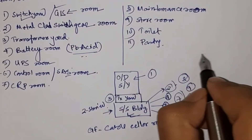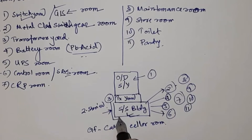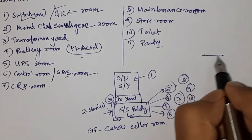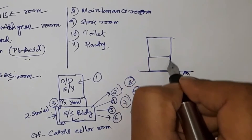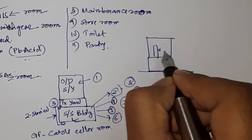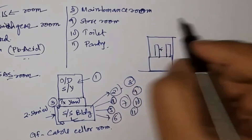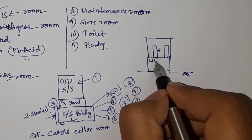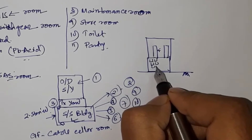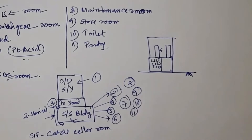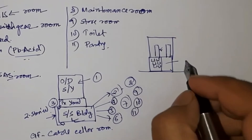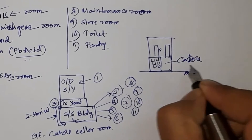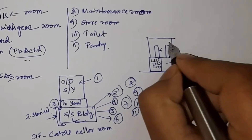If we draw a cross-section of this building, it will look something like this: there is a ground floor which will be the cable cellar room, and above it is the first floor. On the first floor there will be the metal-clad switchboards — say two switchboards are shown here. Cable trays for cabling work are installed at the ground floor level. So the ground floor is the cable cellar room and the upper level is the switchgear room.